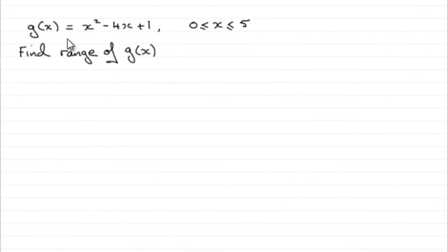Now for this question, we've got g(x) equals x squared minus 4x plus 1, for x valid between 0 and 5 inclusive. We've got to find the range of g(x).